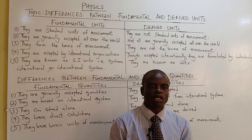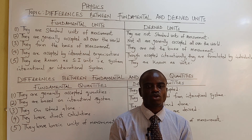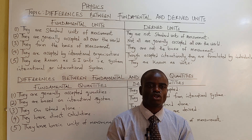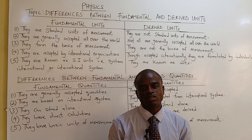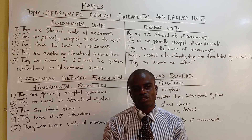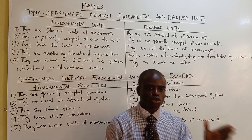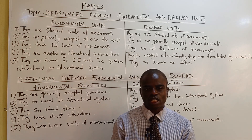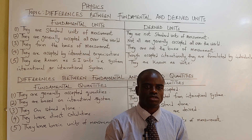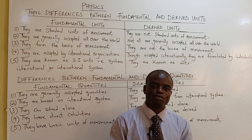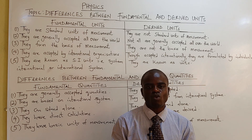We also have power, which is work done over time. The units are joules per second — joules come from the unit of work, and seconds from time — giving joules per second, also known as watt, as the unit of power. We have many more examples.